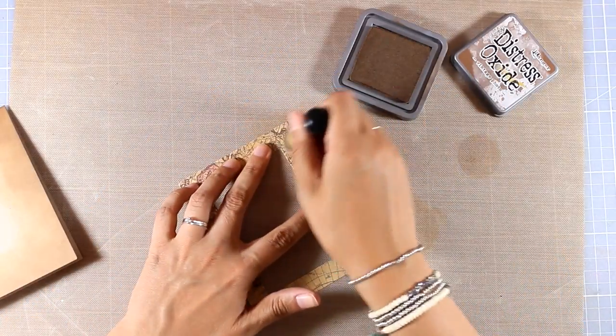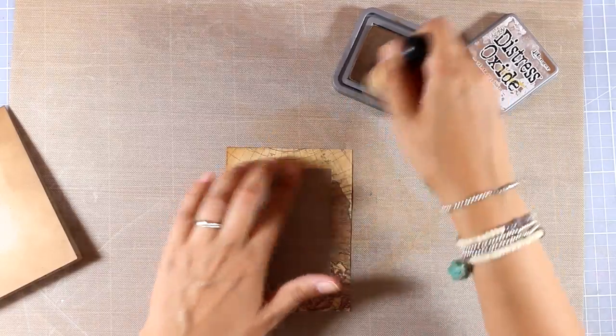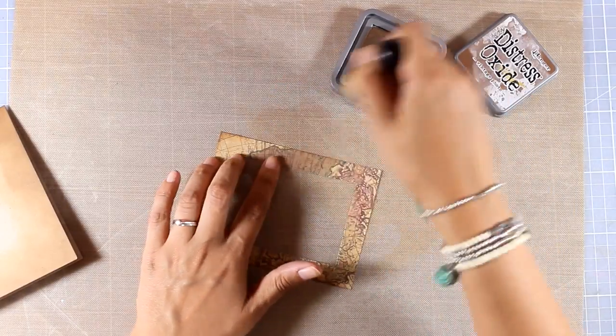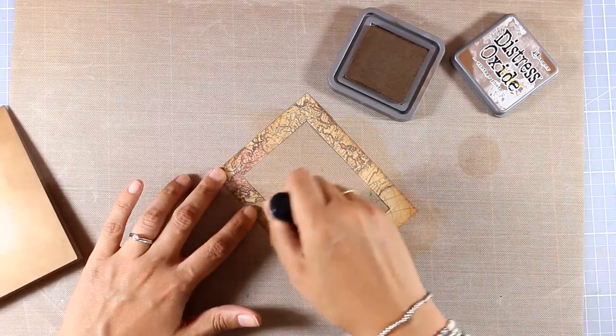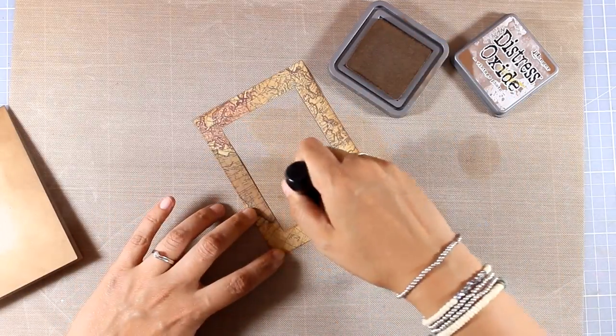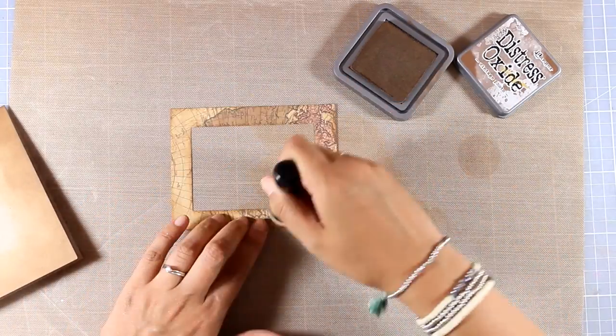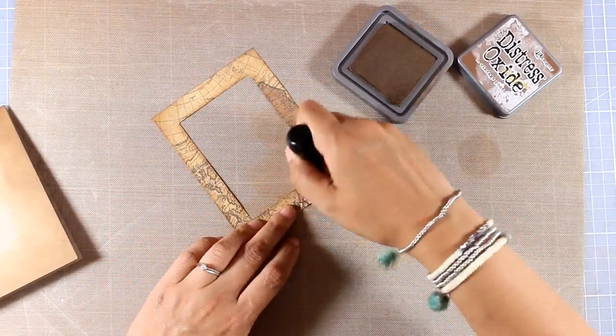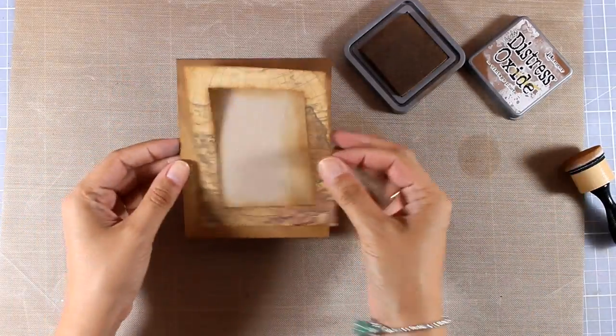Now I want to add that touch of color on my frame as well so everything binds together. For that I'm using the same distress oxide ink and my blending tool. I'm going all over the edges, touching up the edges on the outside of the frame as well as on the inside. These are small touches that you do on your cards but really make a big difference.